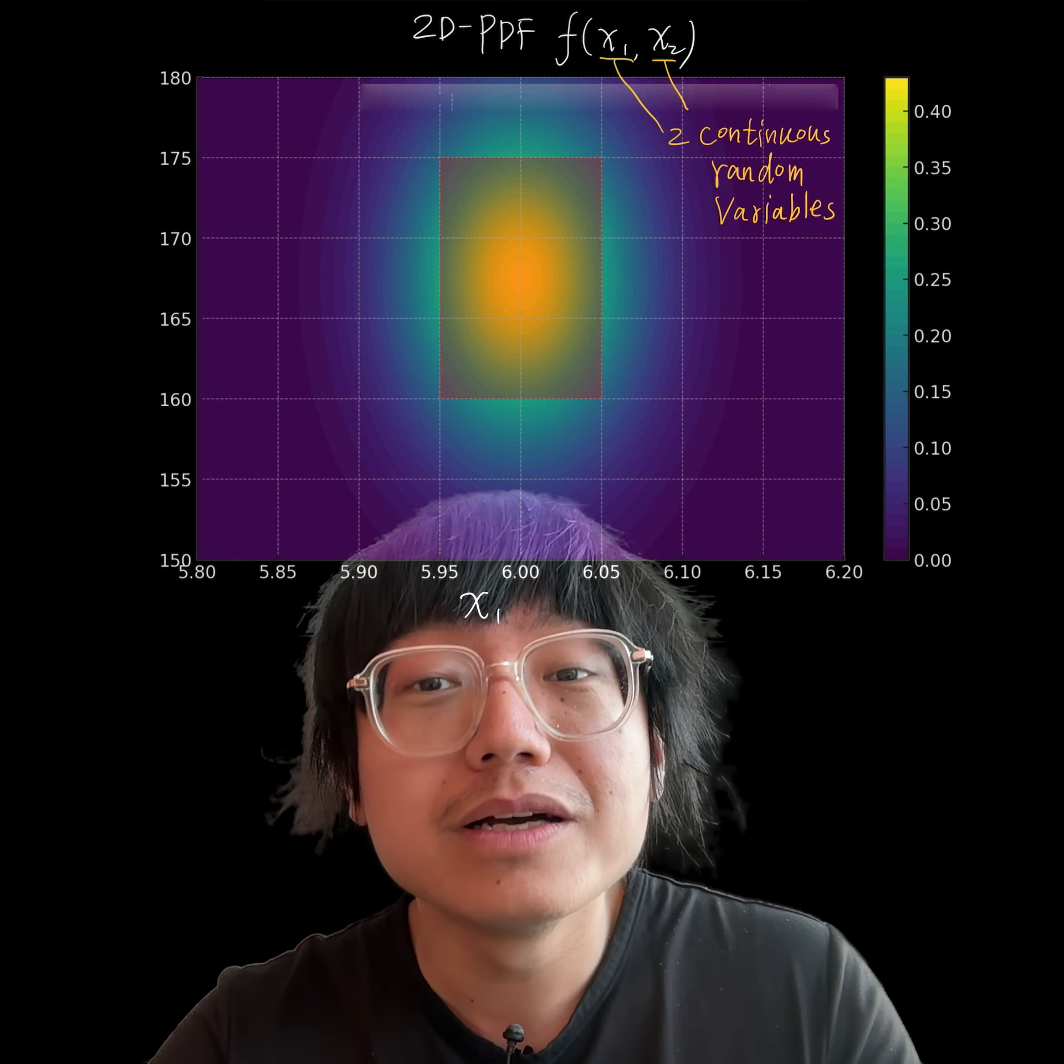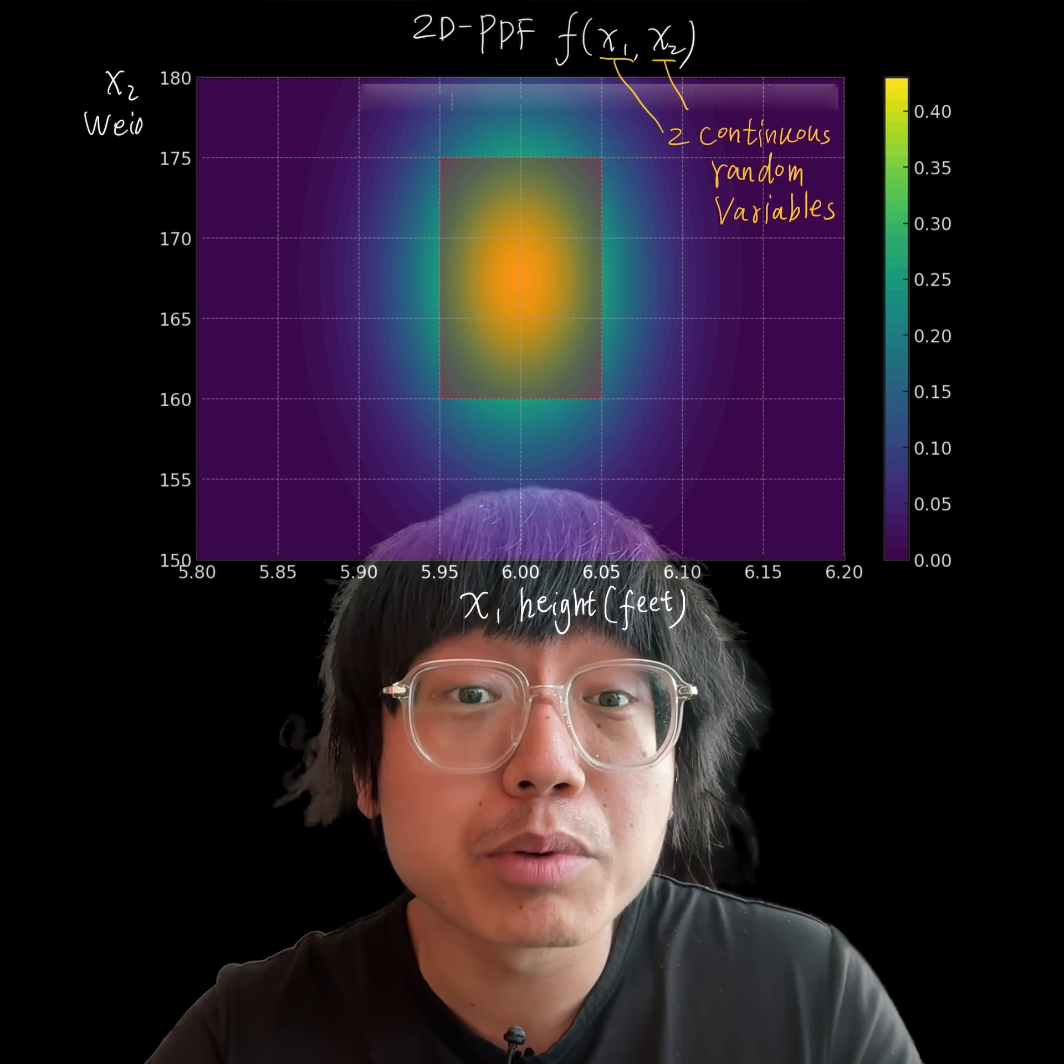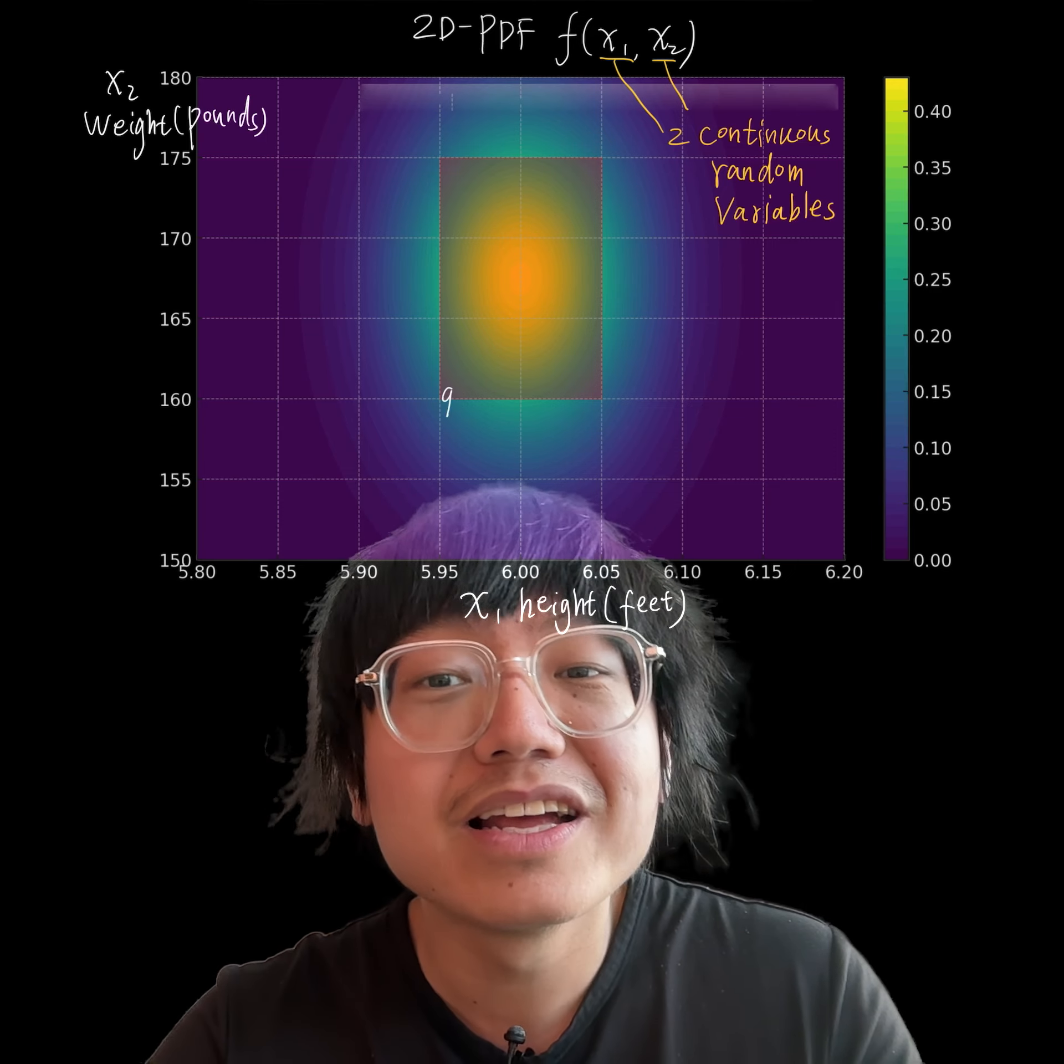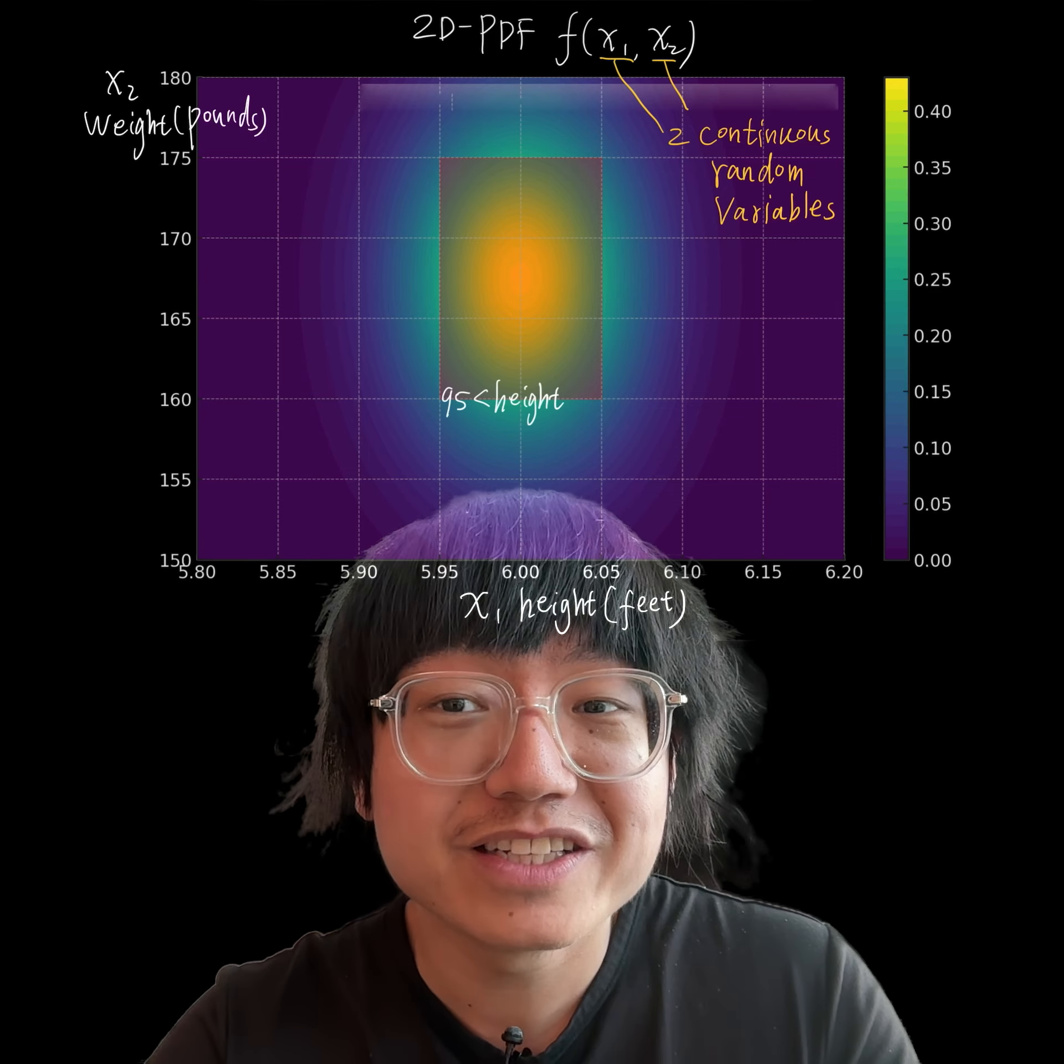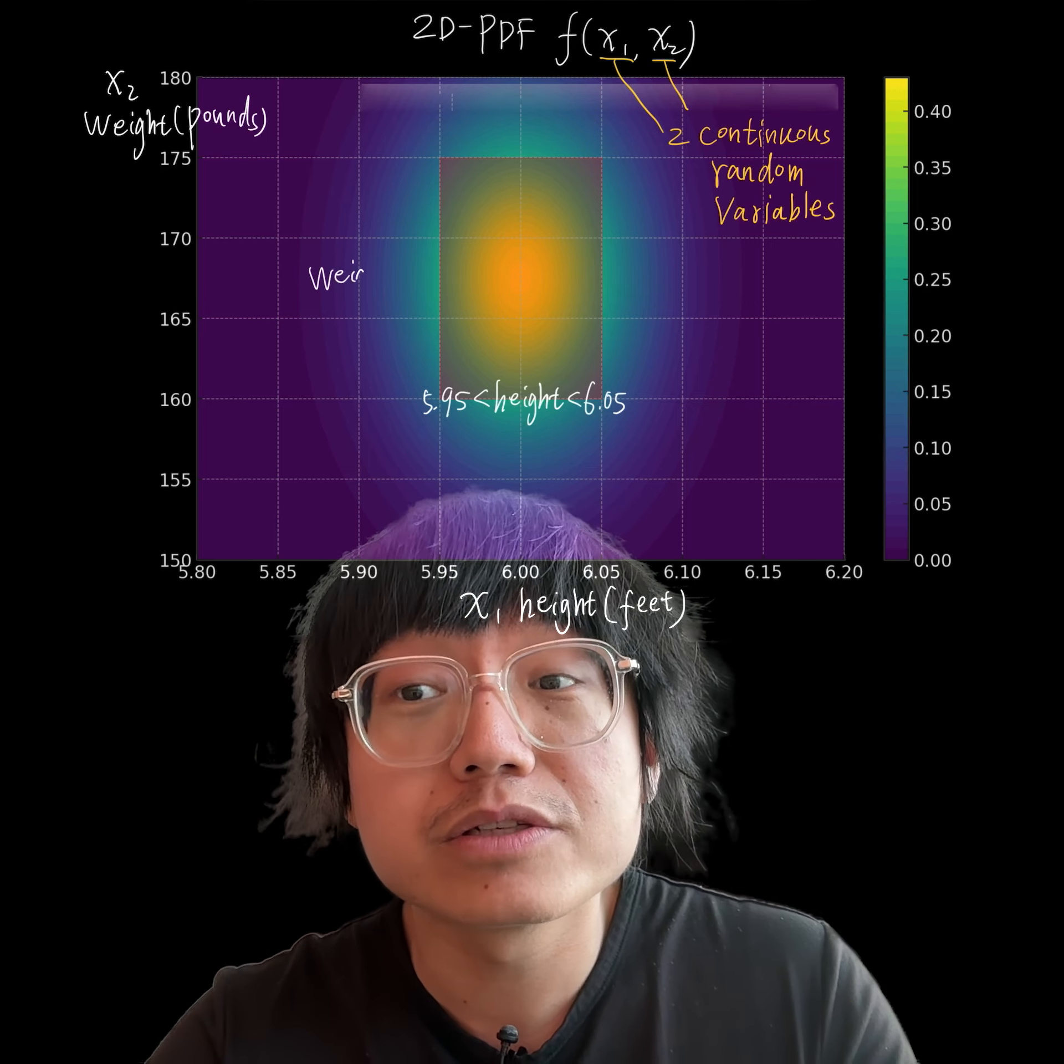So here, x1 represents height and x2 represents weight, and we try to find the joint probability that the height is between 5.95 and 6.05 feet, and the weight is between 160 and 175 pounds.